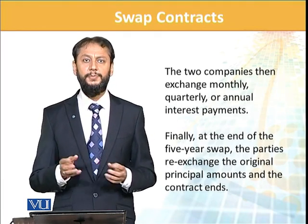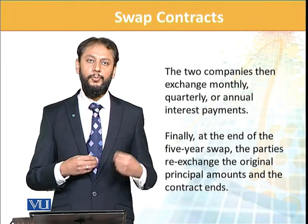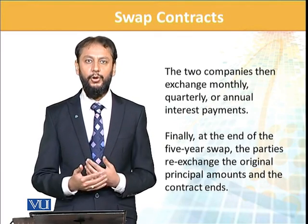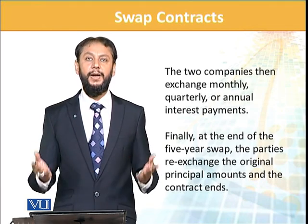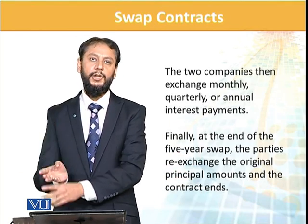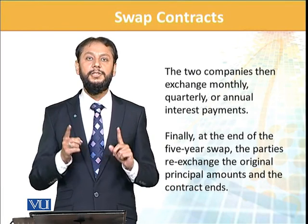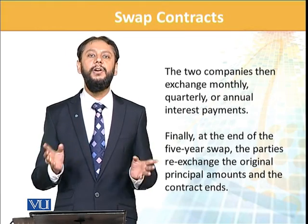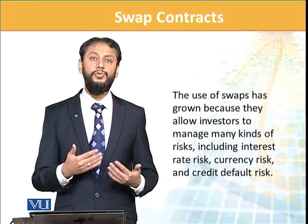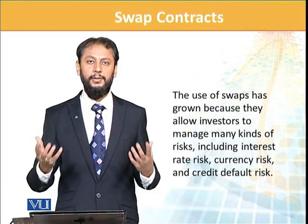The two companies then exchange monthly or quarterly interest payments — the American company pays interest to the other, and vice versa, managing their currency risks. At the end — for example after 5 years — the US company returns the 50 million dollars and the European company returns the 40 million euros. The key point: in a currency swap, the principal amounts are also exchanged, unlike in interest rate swaps where principals are not exchanged. The use of swaps has grown enormously because they help manage multiple risks: interest rate risk, currency risk, and default risk.